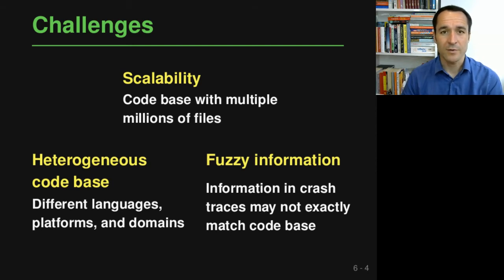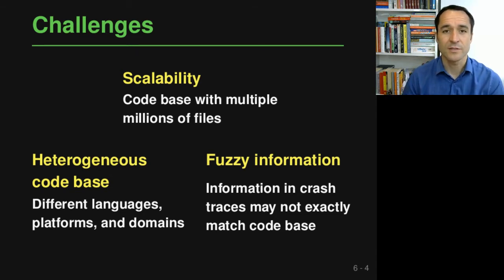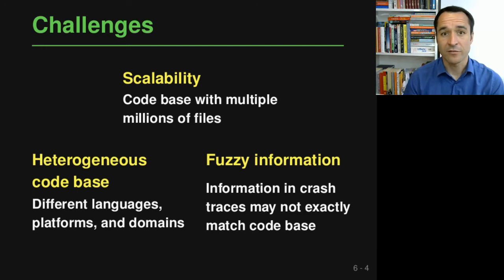Finally, we need to deal with the challenge that the information we are given — these raw crash traces — is a little bit fuzzy, because the information in a crash trace may not exactly match the code base. For example, if a file path is mentioned in a crash trace, it may not match exactly what you see in the code base, because the device paths differ from the paths in the code base.